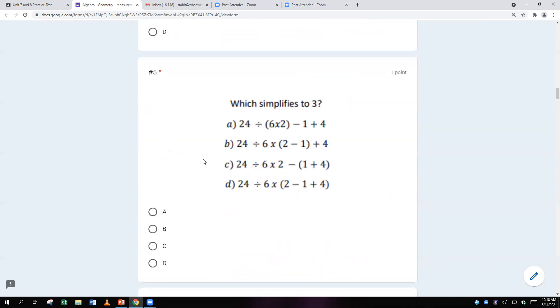Which simplifies to 3? Okay, so what I normally do is I'll just start at one of them and then work my way through the problem. So we have 24 divided by 6 times 2 minus 1 plus 4. The first thing in order of operation is anything in parentheses. Now you have 24 divided by 12 minus 1 plus 4. You always divide or multiply before adding or subtracting. And 24 divided by 12 is 2. Now you have a new problem of 2 minus 1 plus 4. Well, 2 minus 1 is 1. And then 1 plus 4 is 5. So is that simplified to 3? No.